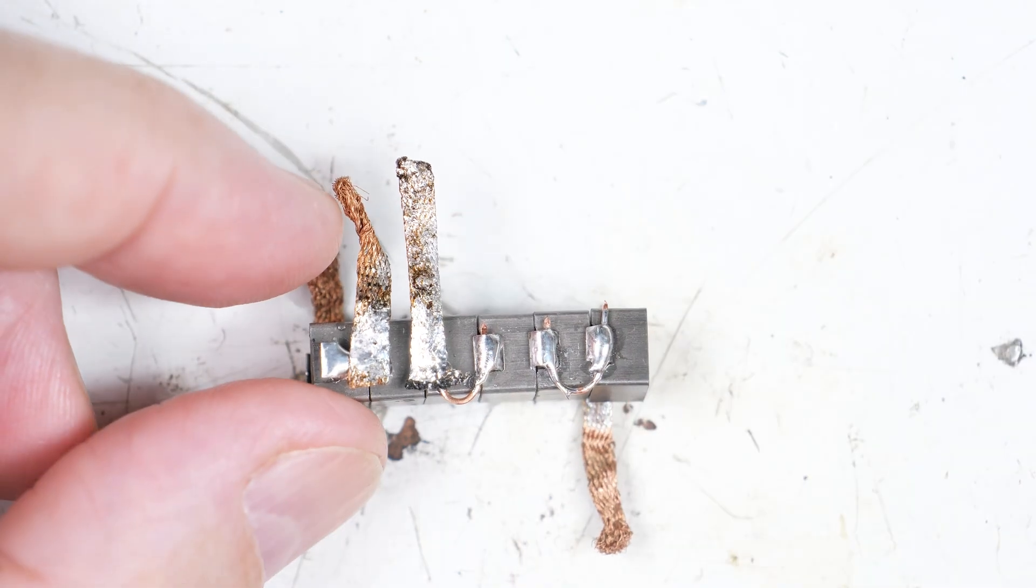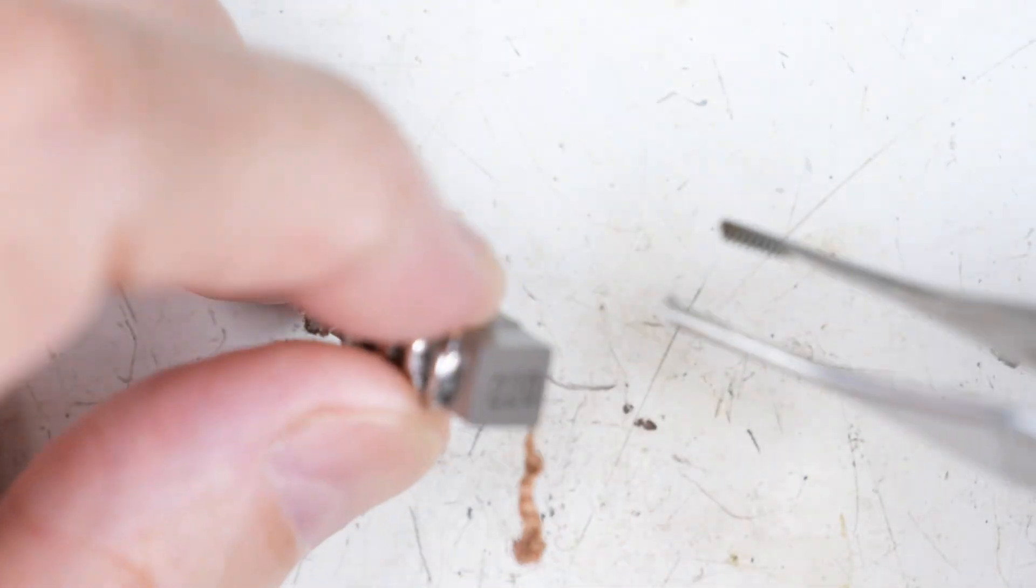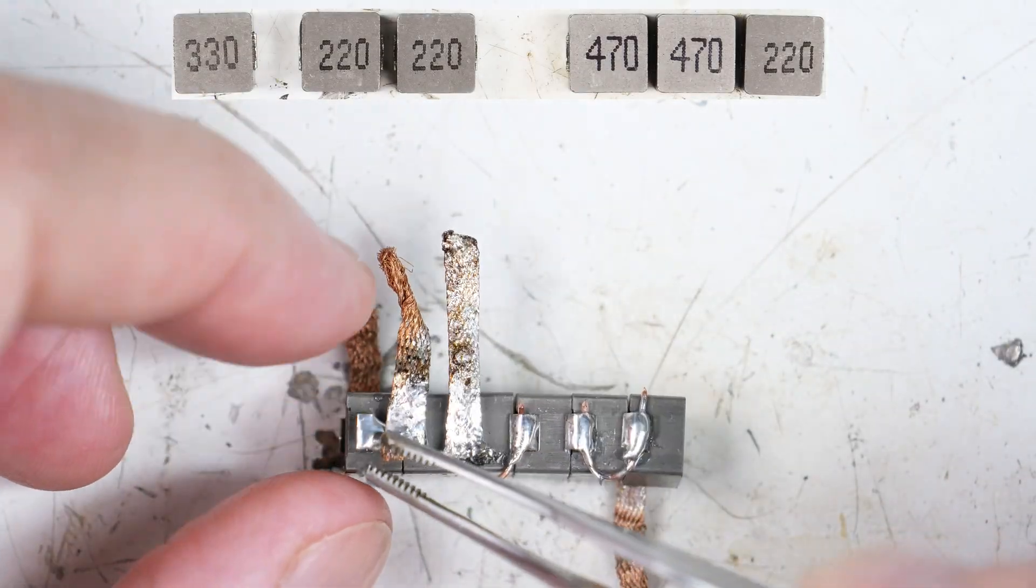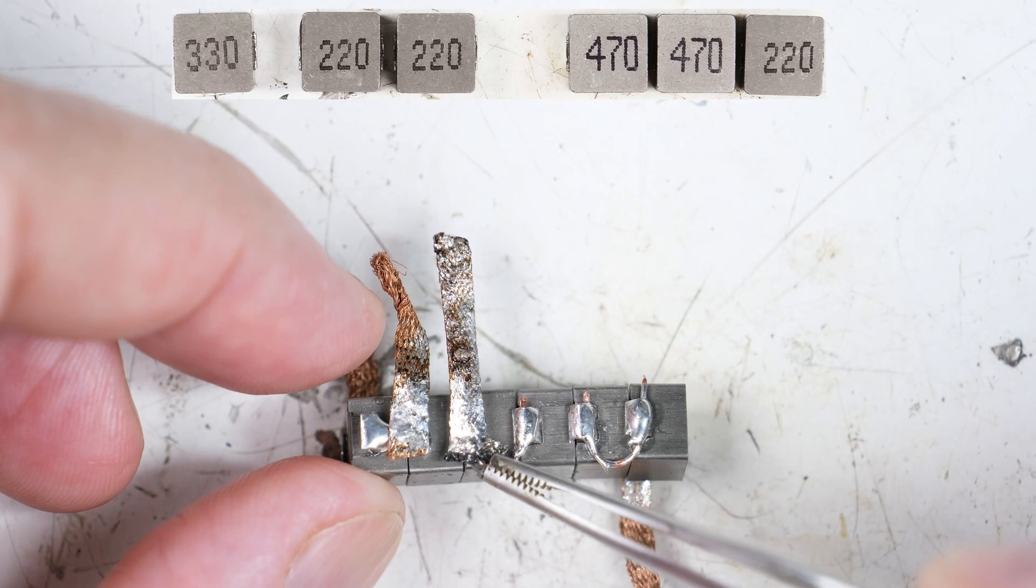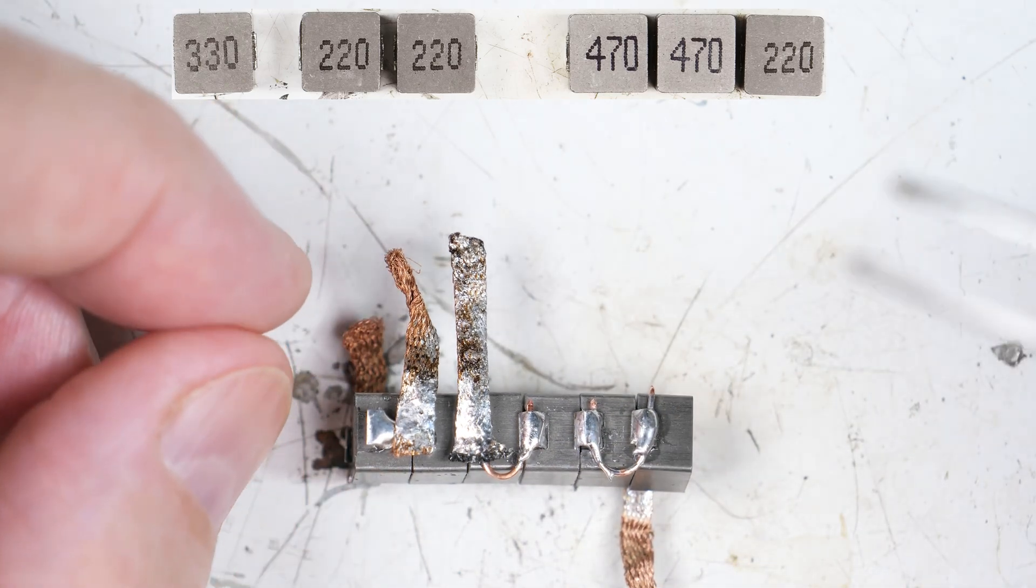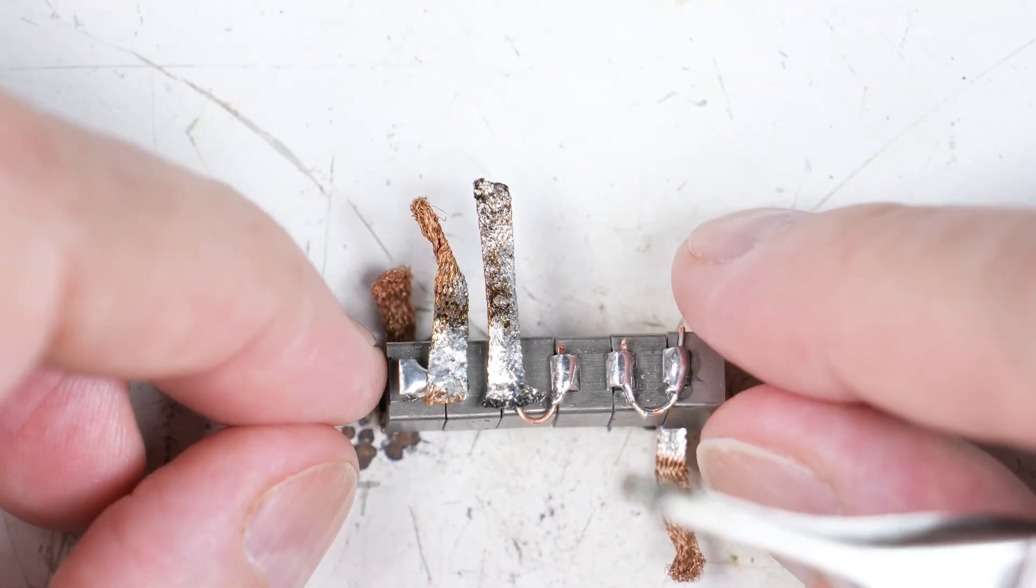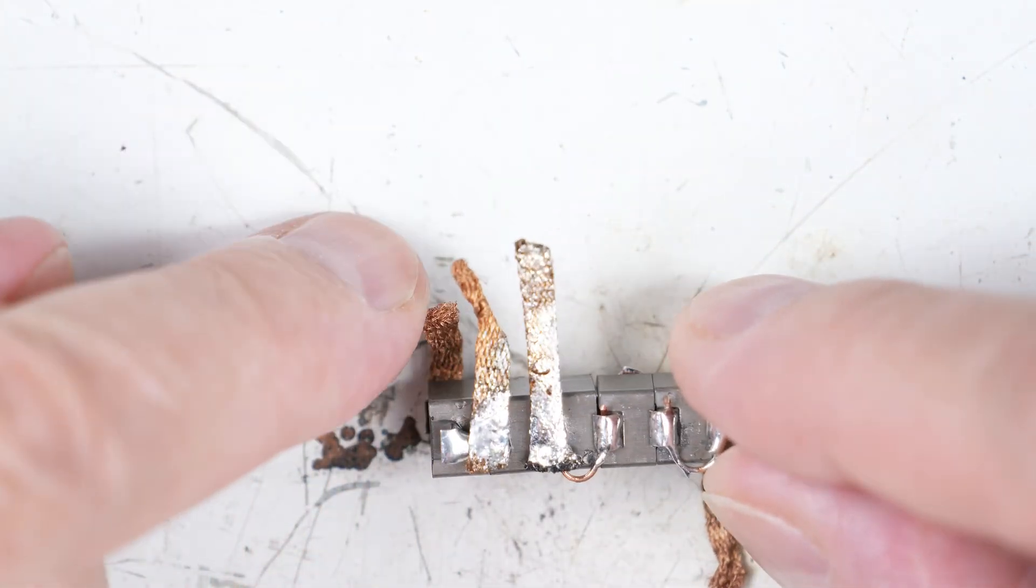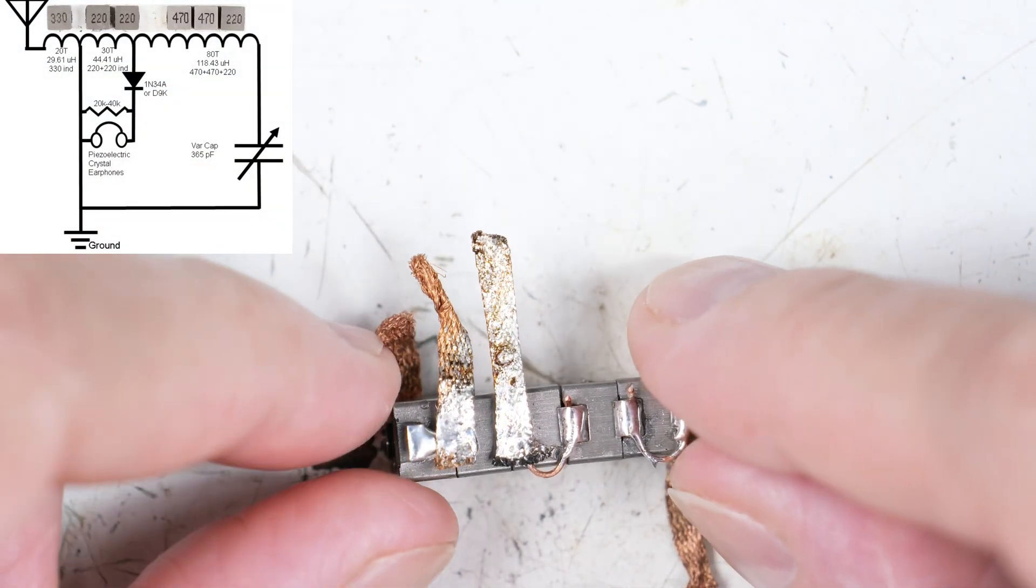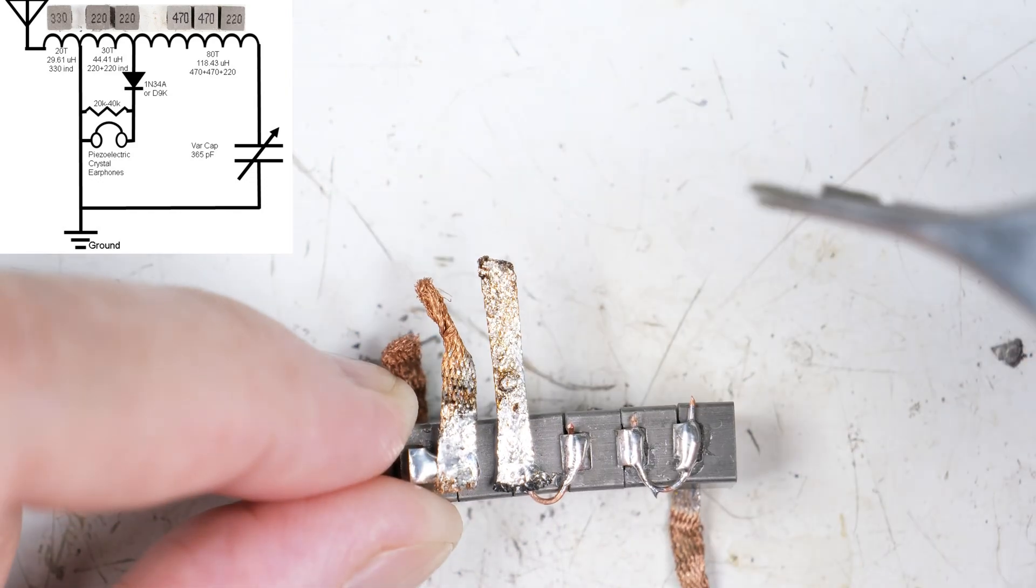Okay, back again. Per our last video, this is the 220 end. This is the very last one. So, it would be 330, 220, 220, 470, 470, and a 220. And instead of laying them out edge to edge, I have put them flat to flat. This is our antenna. Antenna, this is the ground. This is one side of the earphone, and the other side goes to the ground.